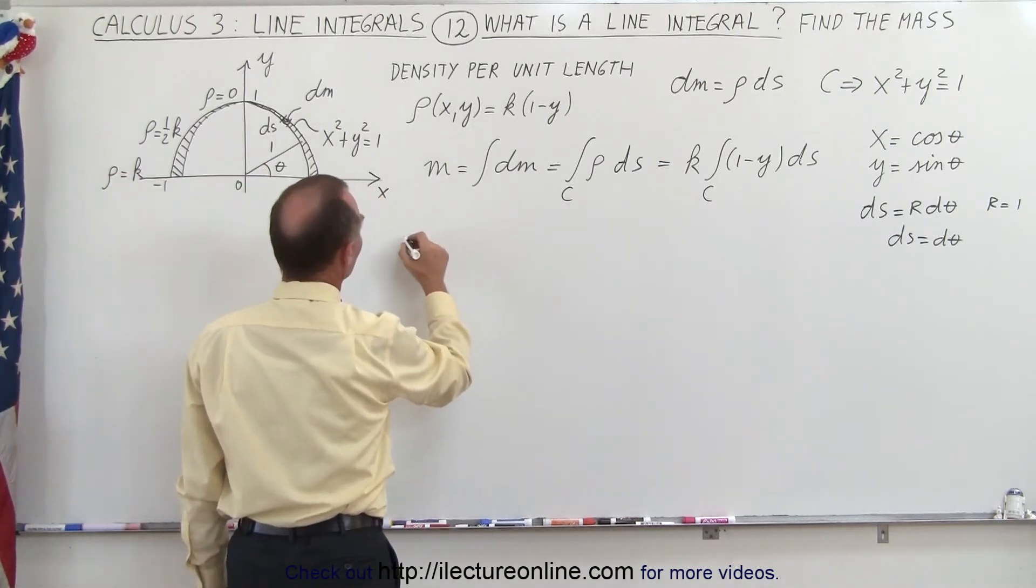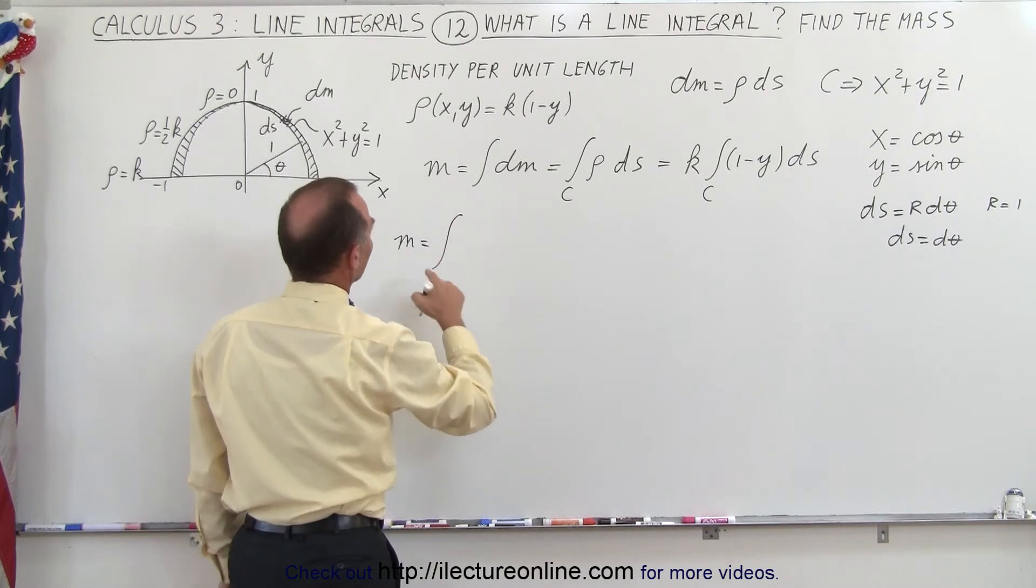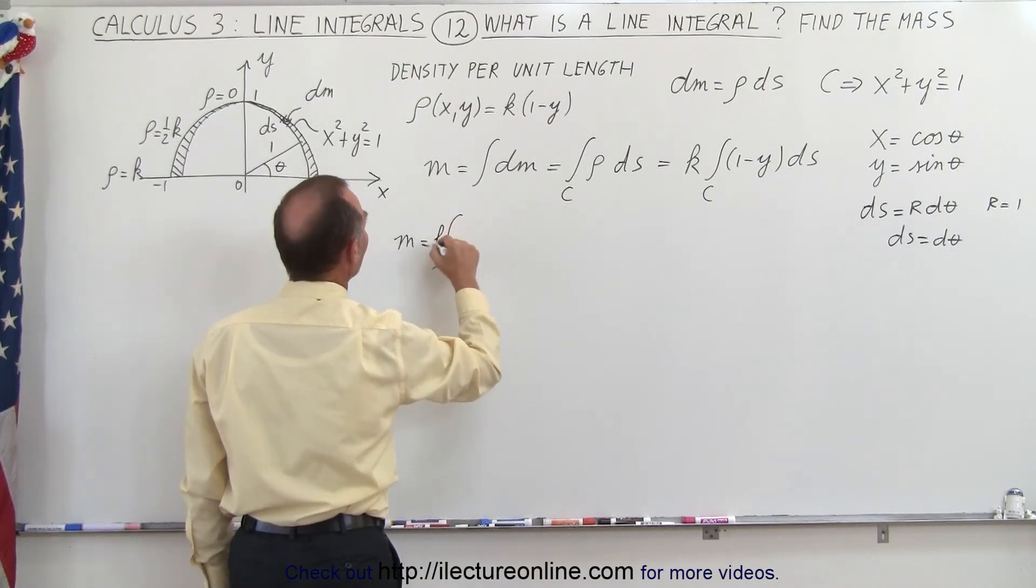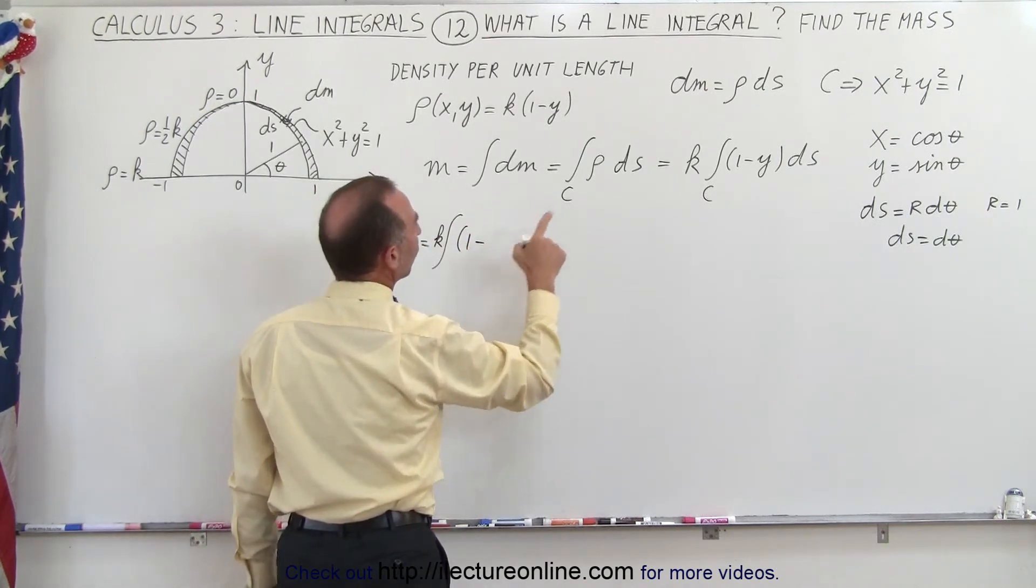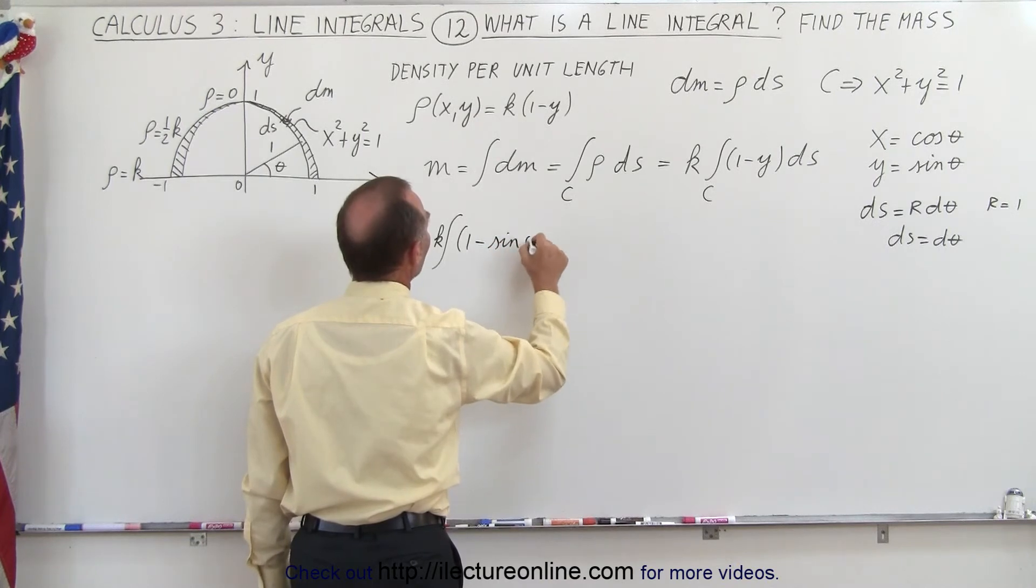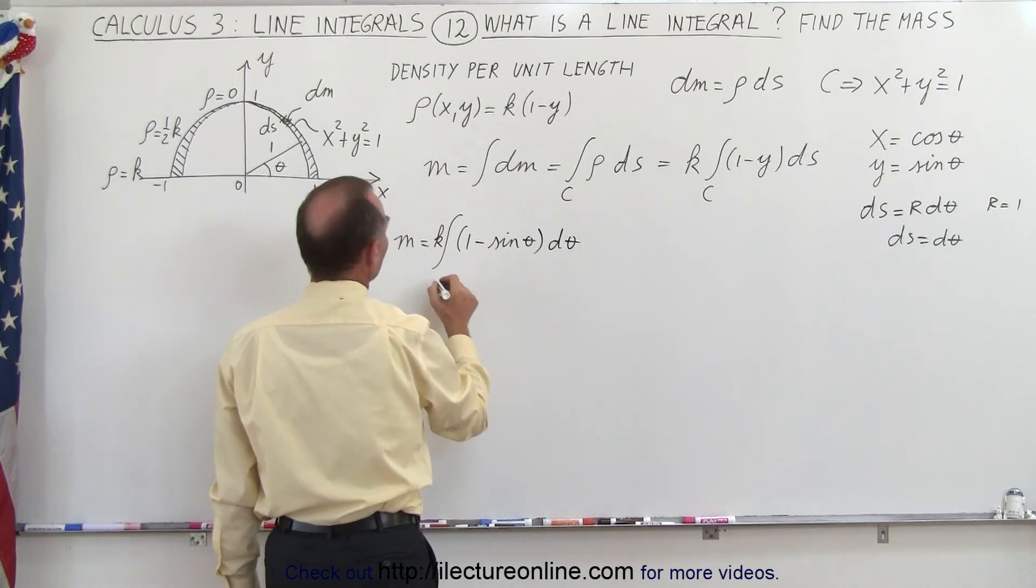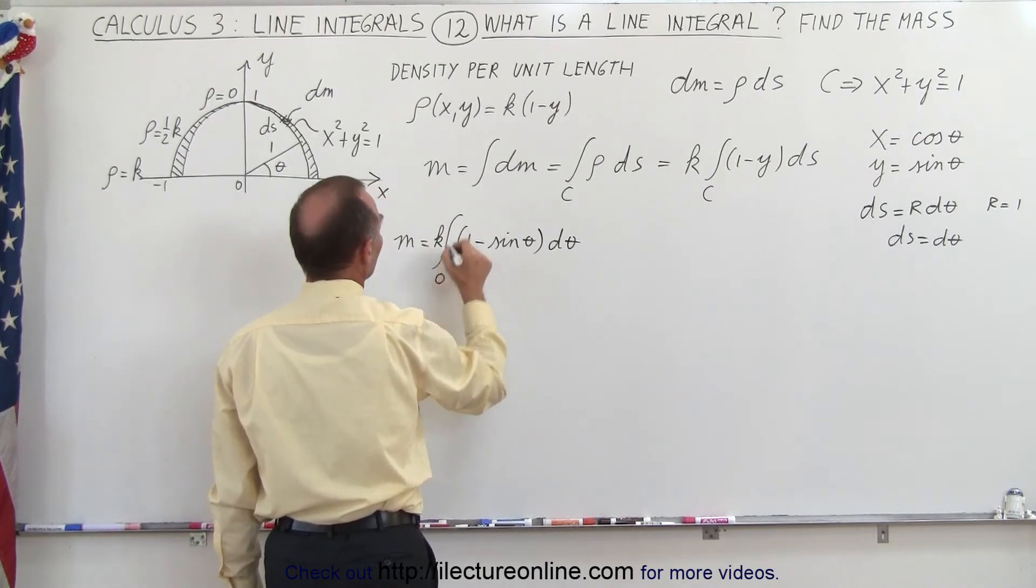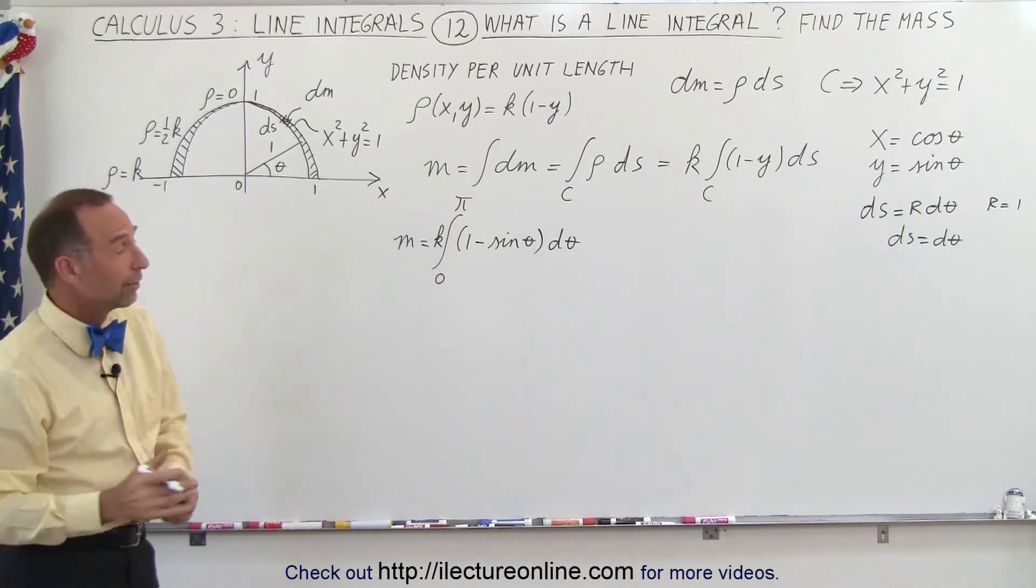So that means that the mass can now be found by taking the integral. Let's see here, I need a k on the outside, the k of 1 minus y, but since y is equal to sine of theta, I can write 1 minus the sine of theta, and ds is going to be d theta, and the limits of integration are going to go from 0 to pi, because it's a semicircle. And now we're ready to integrate.